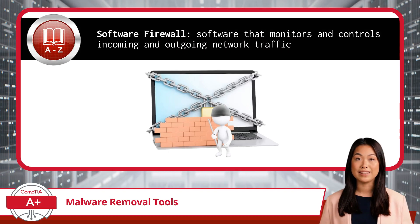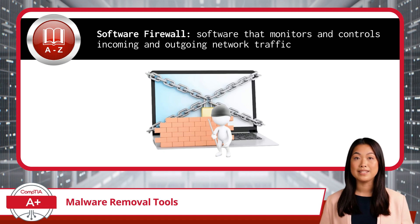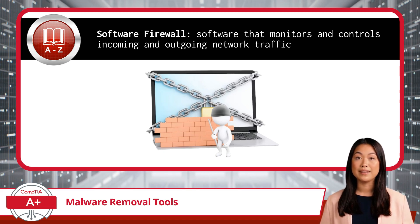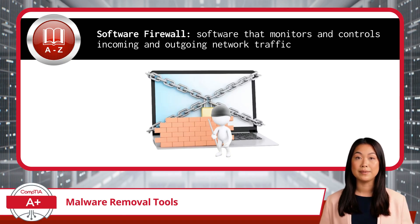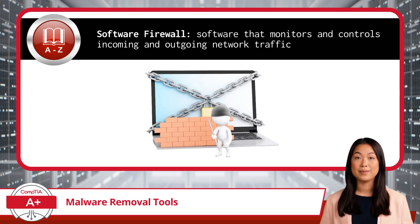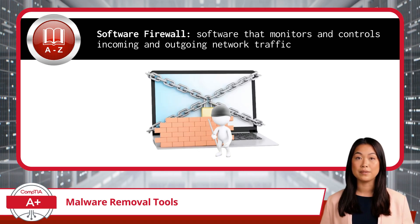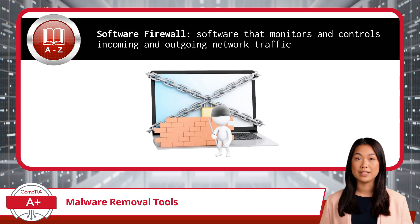With an up-to-date antivirus and anti-malware in place, the next component used in securing a device is a software firewall. This is another type of software installed on a device, designed to monitor and control incoming and outgoing network traffic to prevent unauthorized access to your system. By filtering incoming and outgoing traffic, a firewall can ensure that harmful data packets are blocked while safe ones are allowed through. This is particularly helpful in preventing malware from sneaking in or stealing sensitive data. Configuring a firewall properly ensures that your files and network remain safe from external threats.